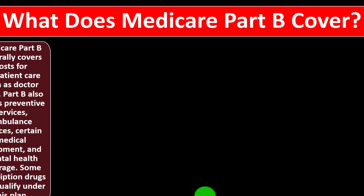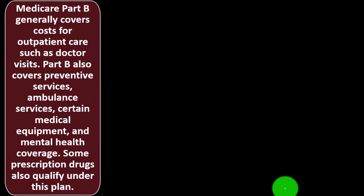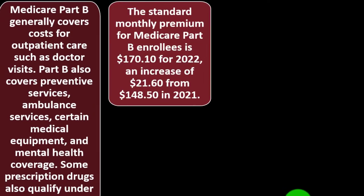What does Medicare Part B cover? Medicare Part B generally covers costs for outpatient care such as doctor visits. Part B also covers preventative services, ambulance services, certain medical equipment, mental health coverage, and some prescription drugs.